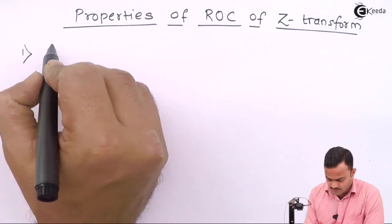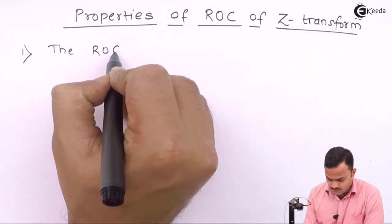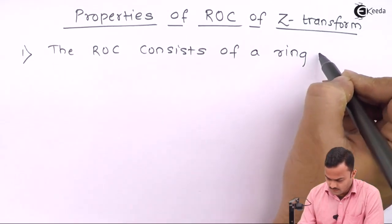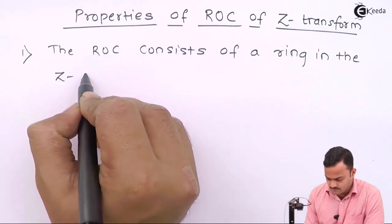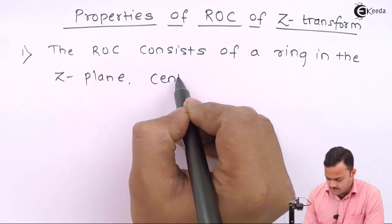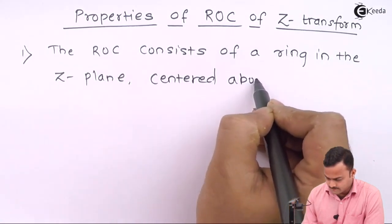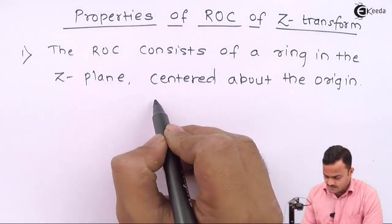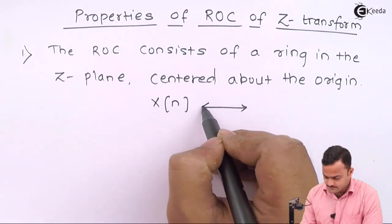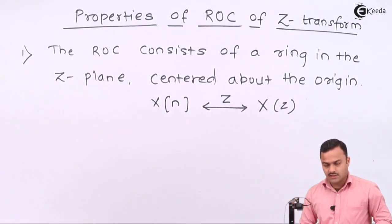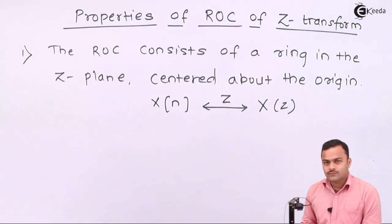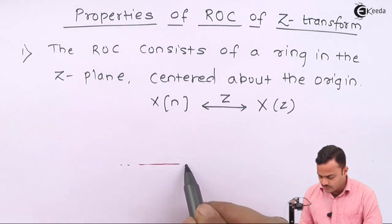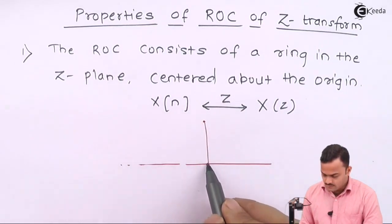The first property: the ROC consists of a ring in the Z-plane centered about the origin. That means any function X(z), which is the Z-transform of x(n), the values of Z for which X(z) is finite — called the ROC — consists of circular lines, or you can say a circle whose center is always the origin.